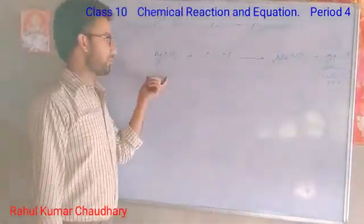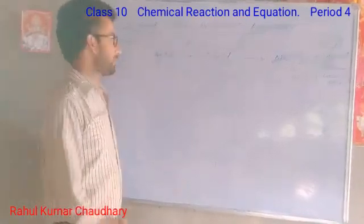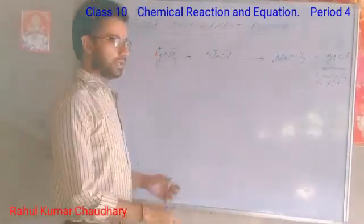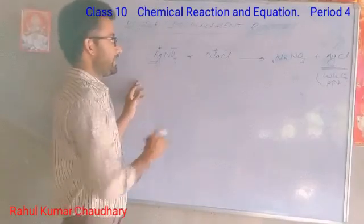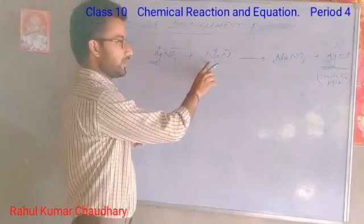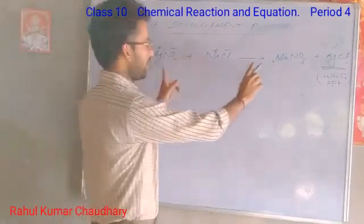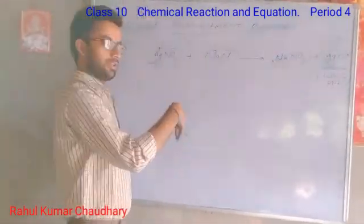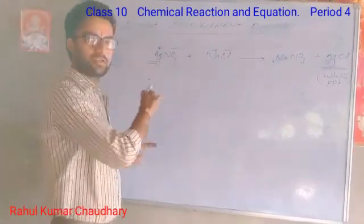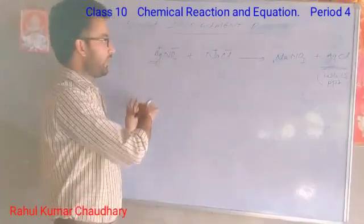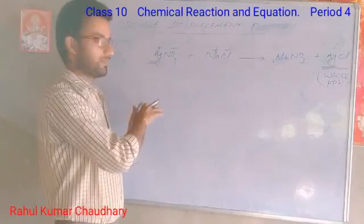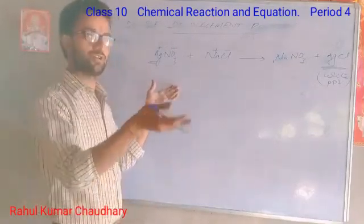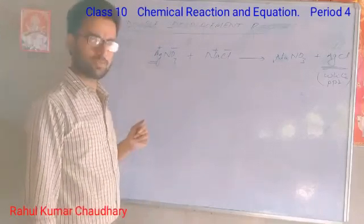Here we can see this reaction in terms of ions. In AgNO3 and NaCl, the ions exchange — Ag⁺ and Na⁺ swap their partners. This ion exchange is called a double displacement reaction.